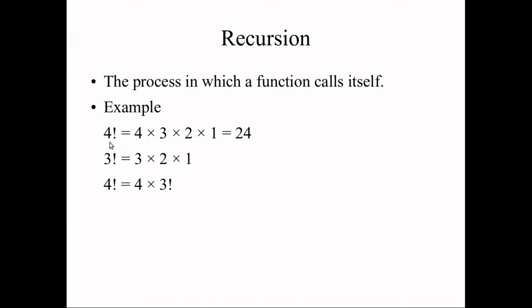For example, take 4 factorial: 4! = 4 × 3 × 2 × 1 = 24, and 3! = 3 × 2 × 1. So 4! can be written as 4 × 3!. Again, 3! can be written as 3 × 2!, and this process repeats again and again. If you write a function that repeats itself, you can call that function within itself.